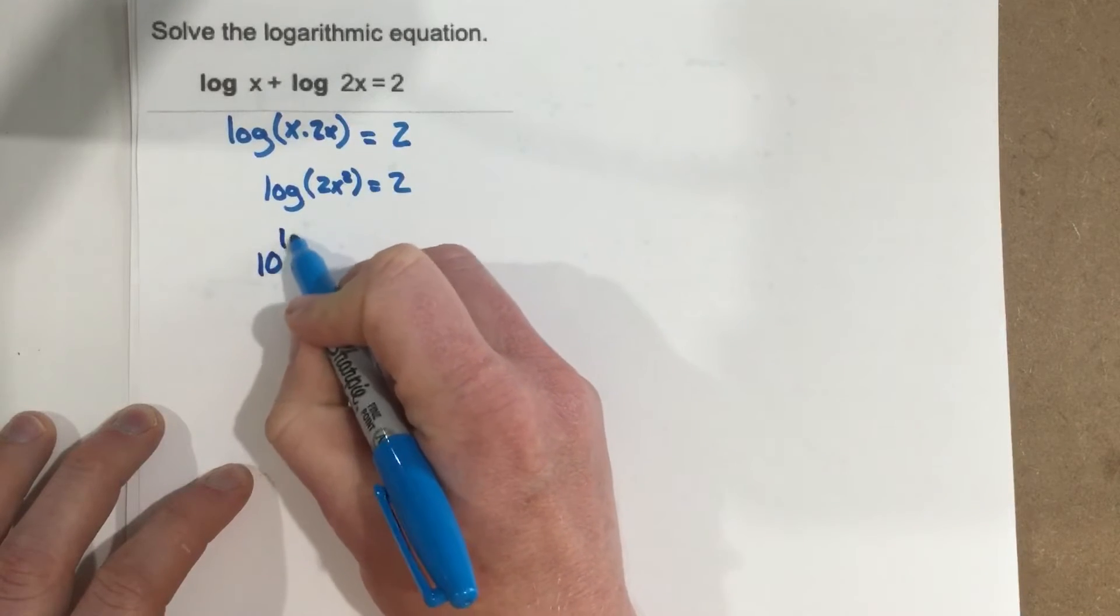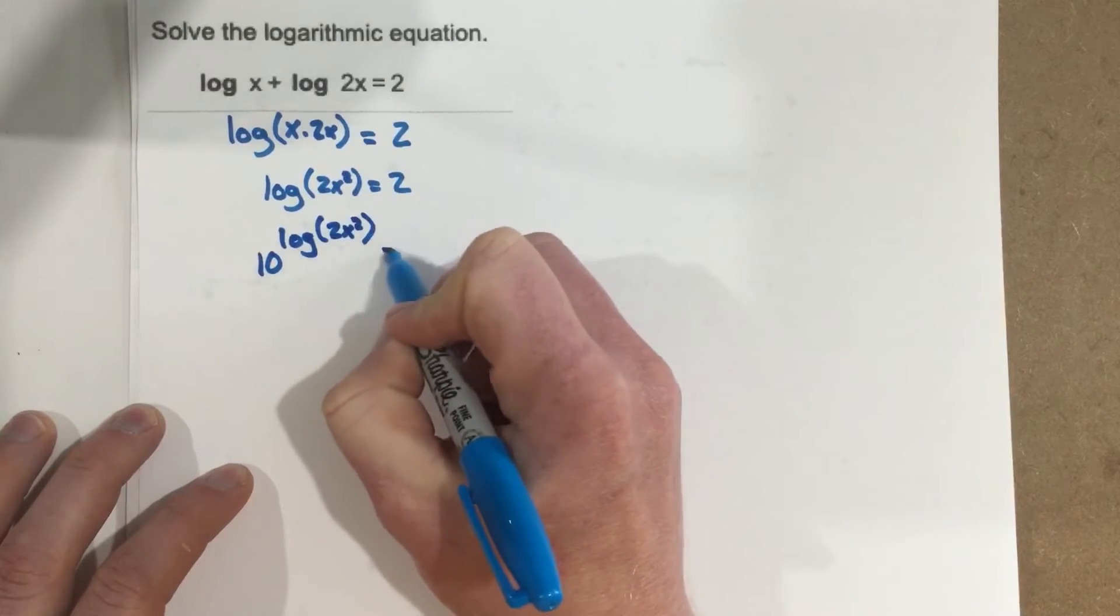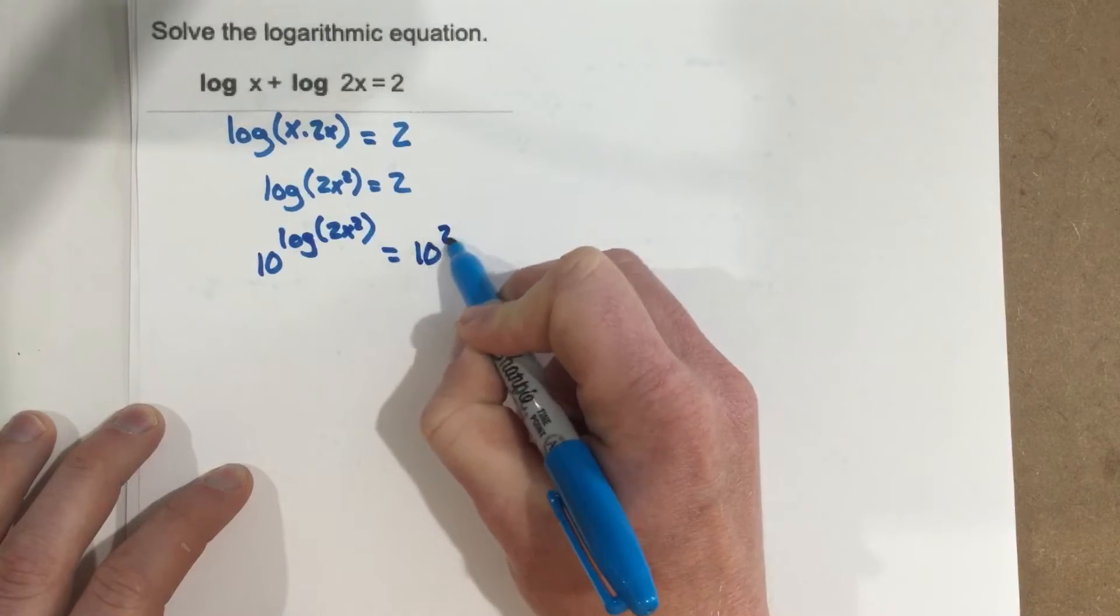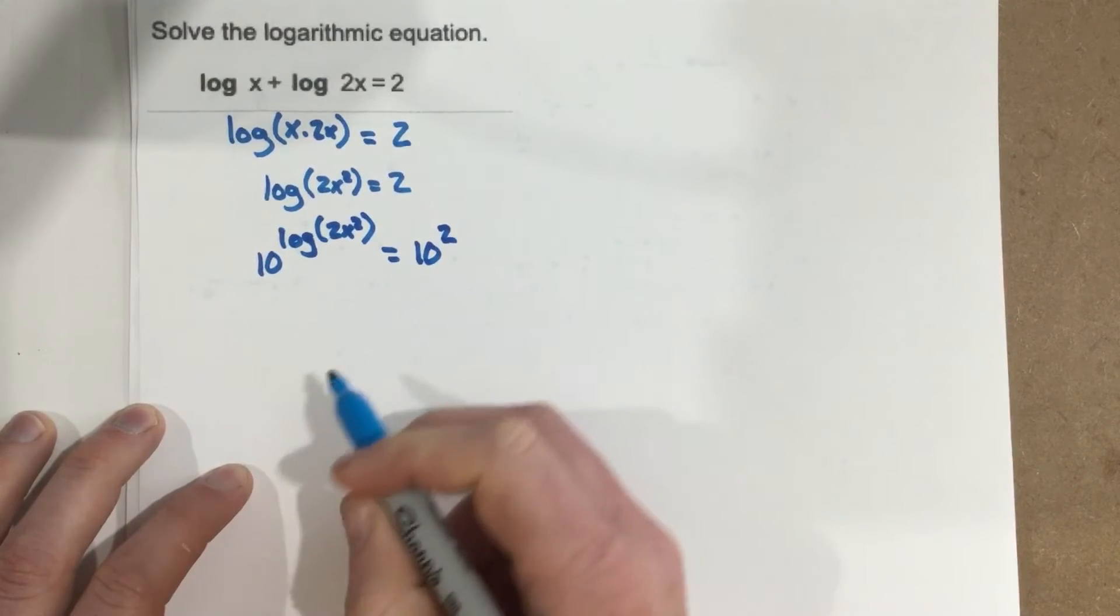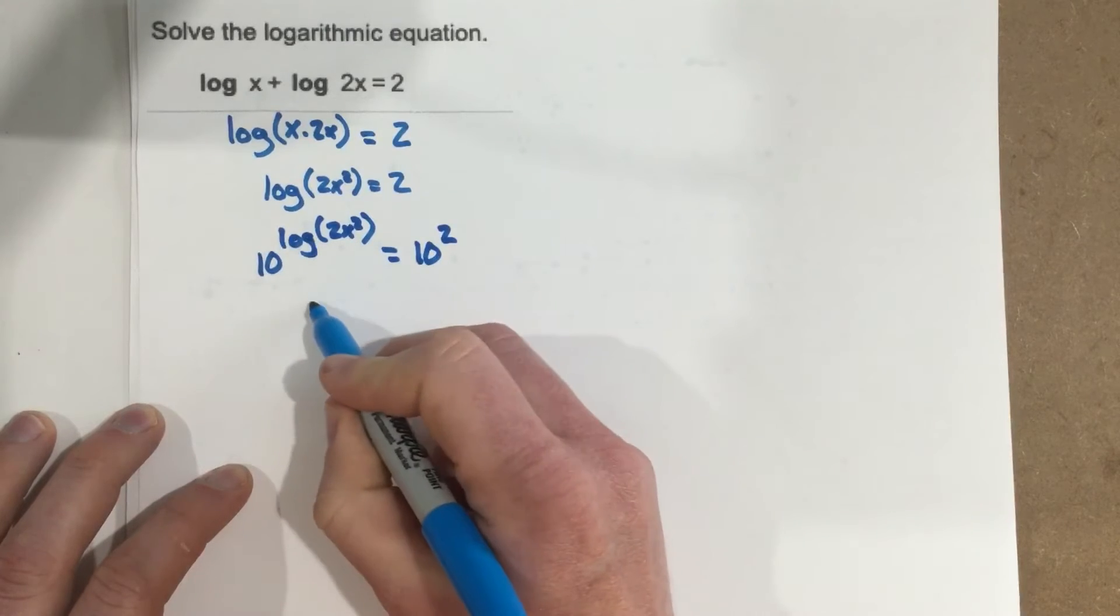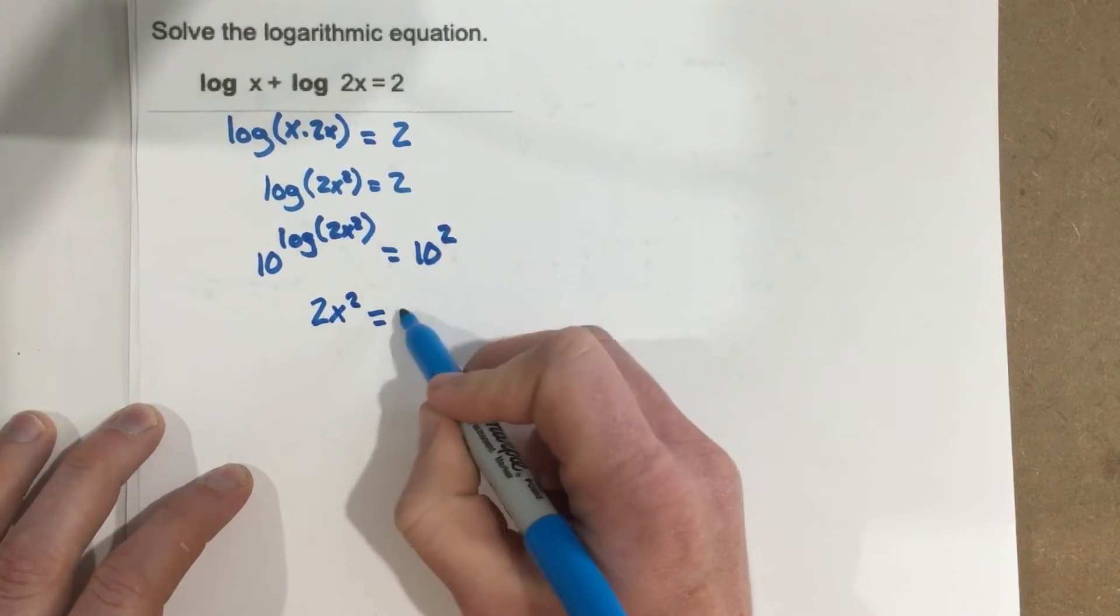So I say 10 to the log of 2x squared. And if I do it to the left side, I'm going to do it to the right side, so it's 10 to the second power. 10 to the log base 10, this cancels, leaving you just with 2x squared equals 10 squared, which is 100.